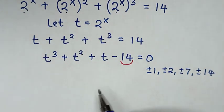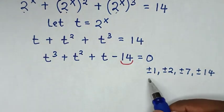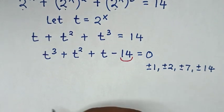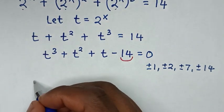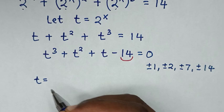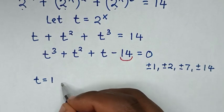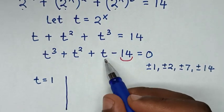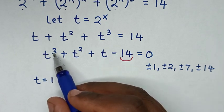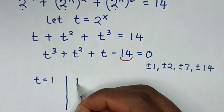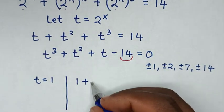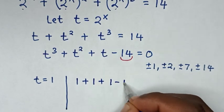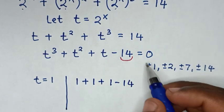So we start testing from the lowest factor going upward. When we test t equal to 1, we substitute 1 in this position of t, so it will be 1 power of 3 is 1, plus 1 power of 2 is 1, plus 1,